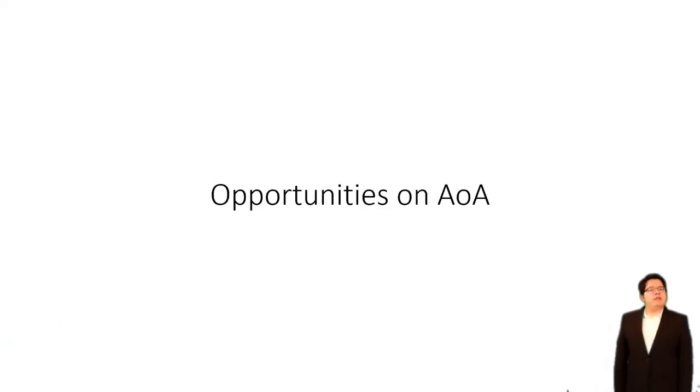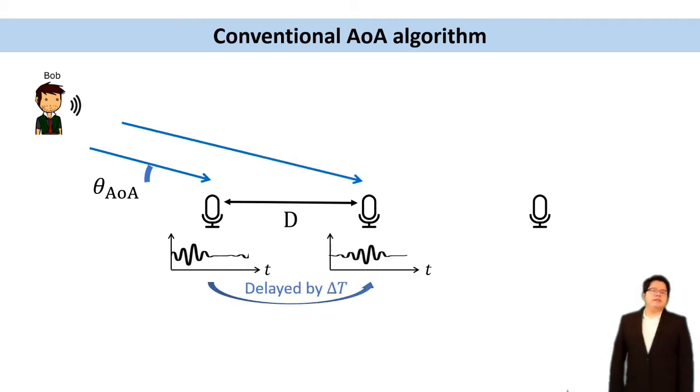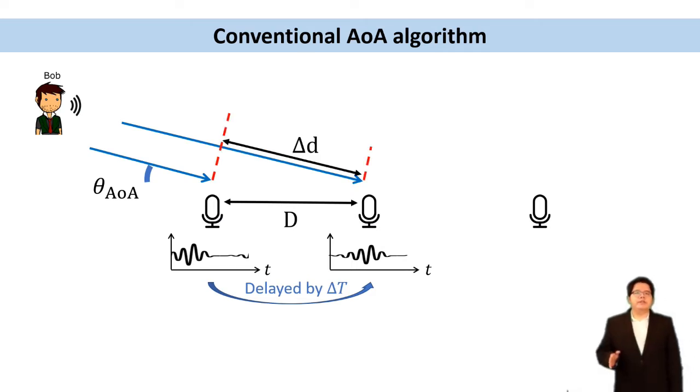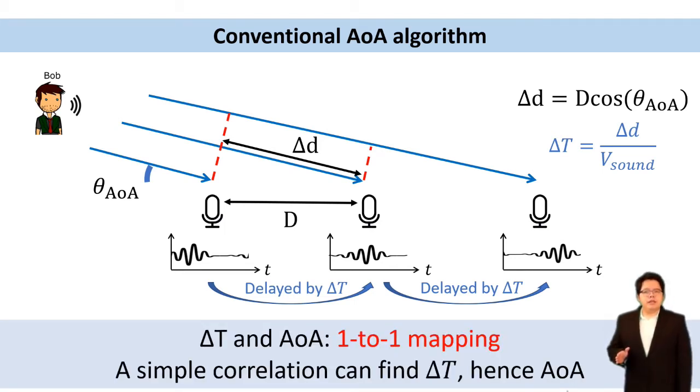How can we estimate the AOA using the microphone array? Here, we give an example of three microphones separated with the same distance d. When the signal comes from an AOA theta, the left microphone first receives the signal, and then the middle after delta t seconds. This is because the signal needs to travel an additional distance delta d in order to arrive the middle microphone. We can see that from geometry, the delta t, delta d, and AOA theta, they are one to one mapping. So we can just apply a simple correlation to the received signal to find the delta t, and then we can infer the theta AOA.